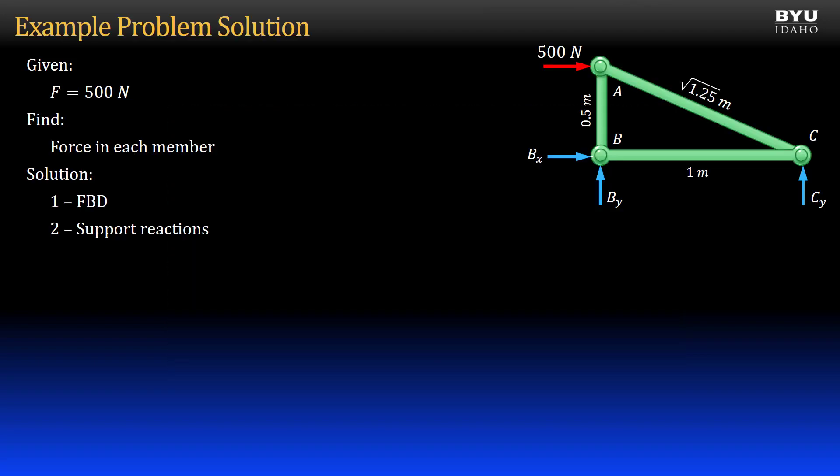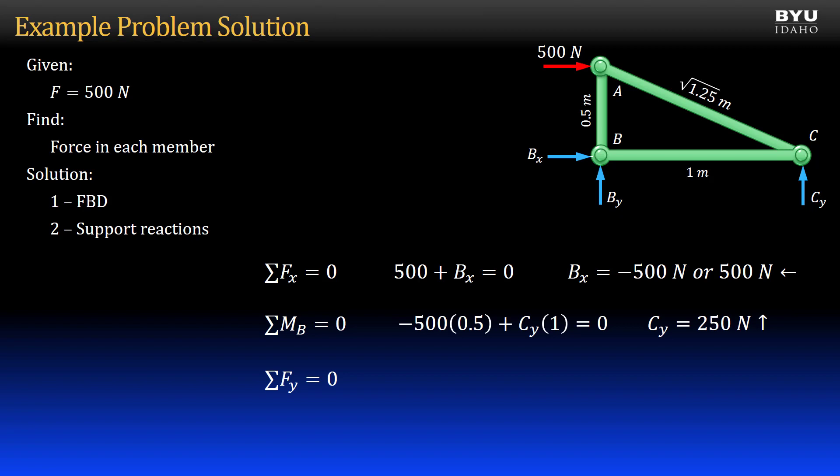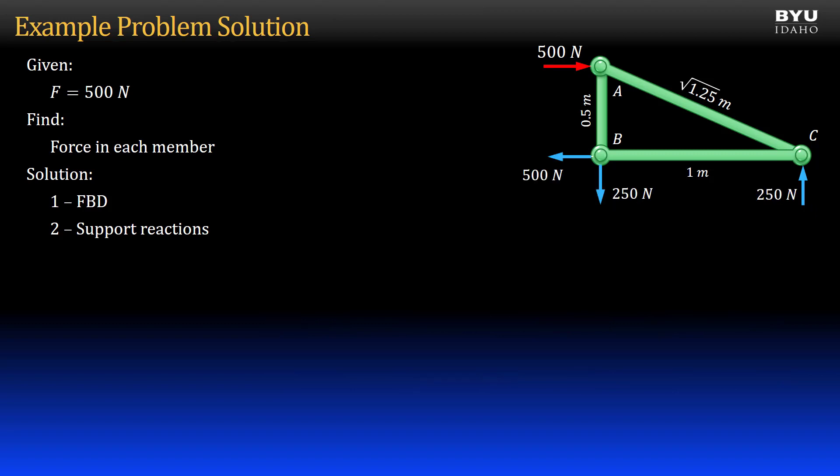The next step is to get the support reactions. I will first sum forces in the x-direction to zero to get reaction Bx. It comes out negative, so it is acting to the left. Next, I sum moments to zero about point B to get reaction Cy. Last, I sum forces in the y-direction to zero to get By. It comes out negative, so it is acting downward. I update my free body diagram to show the reactions acting in the correct directions. This will help me avoid mistakes later.